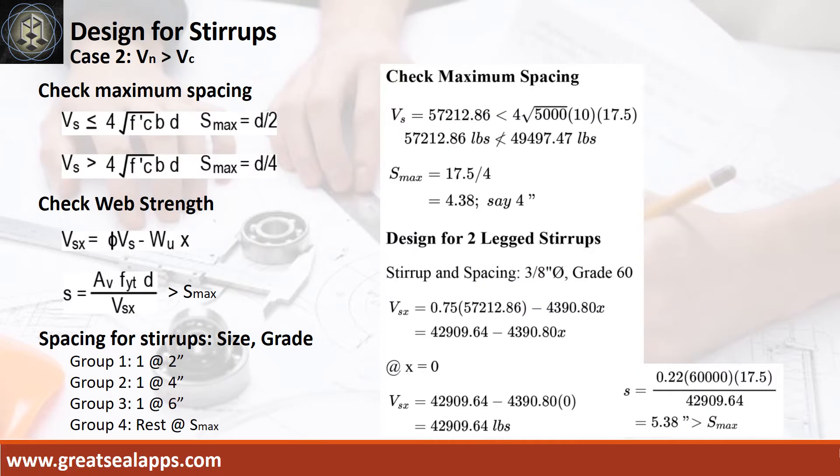Maximum spacing is 4 inches. The shear force at face of support is 42,909.64 pounds, and initial spacing at 5.38 inches. The stirrup spacing are as follows: 1 at 2 inches, rest at 4 inches.